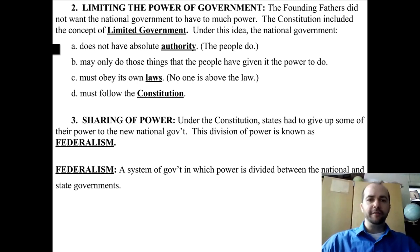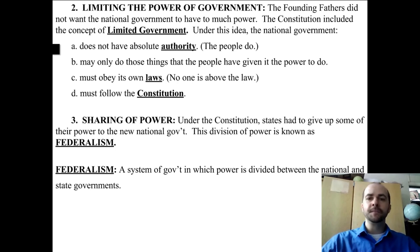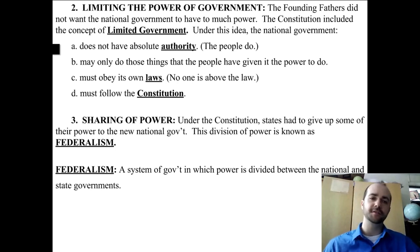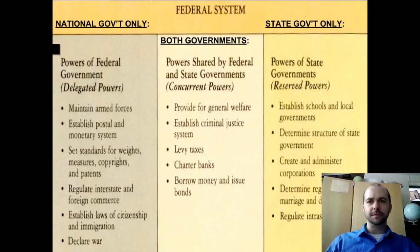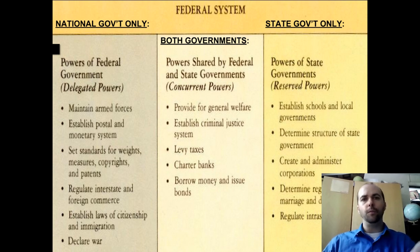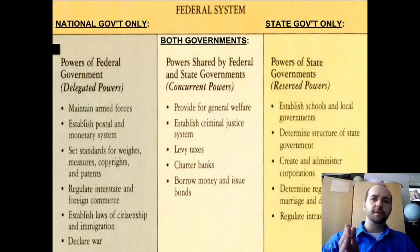Number three is sharing of power. Under the Constitution, states had to give up some of their power to the national government, but the national government does not have certain powers — only the states do. This division of power is known as federalism. Our nation today is run by a federalist system of government, in which power is divided between the national and state governments. You should pause here and look at what powers the national government has, which powers the state governments have, and which powers both governments share.